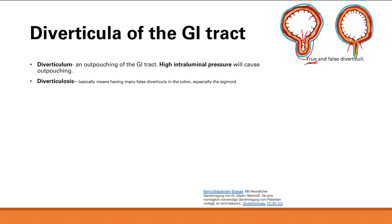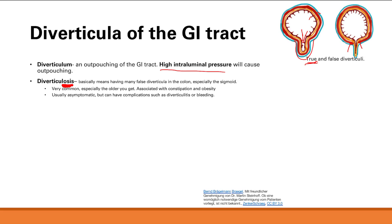Diverticulosis — the suffix '-osis' means a condition — means having many false diverticula in the colon, especially in the sigmoid colon on the left side. This is very common, especially in older patients, and it's associated with constipation and obesity. Both constipation and obesity increase intraluminal pressure, leading to more and more outpouchings. Usually these are asymptomatic, but complications can include diverticulitis or bleeding, since blood vessels in the area can rupture.